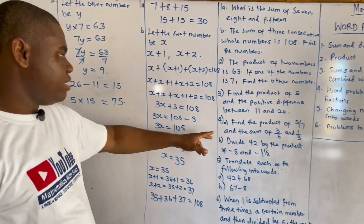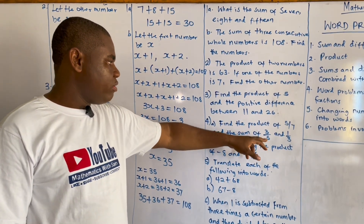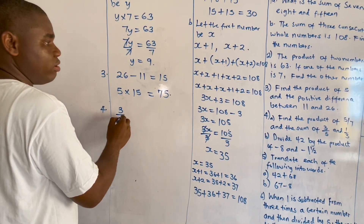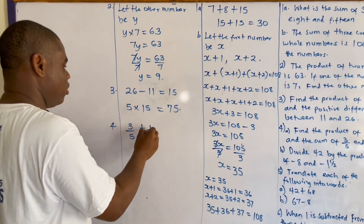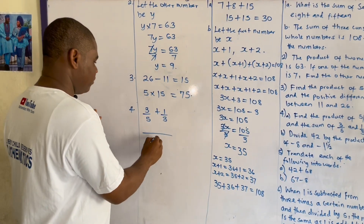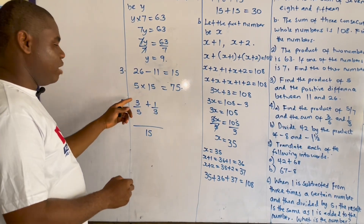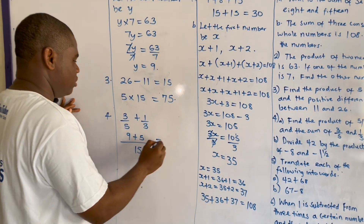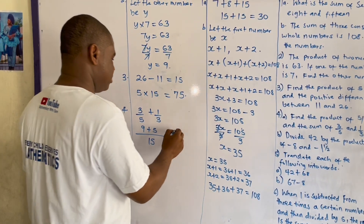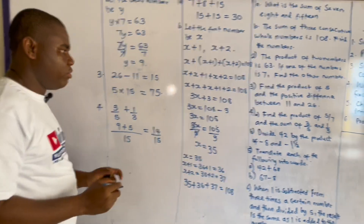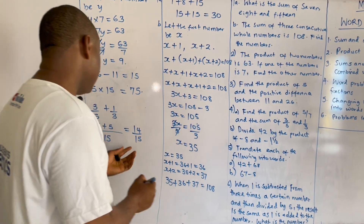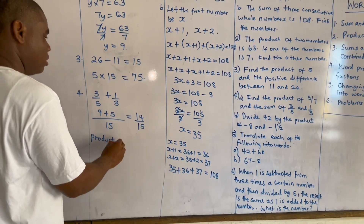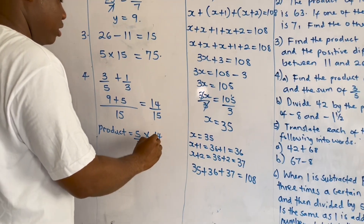For example four, the first part: find the product of five-sevenths and the sum of three-fifths and one-third. First, find the sum of three-fifths and one-third. The common denominator of five and three is fifteen. Three-fifths becomes nine-fifteenths, and one-third becomes five-fifteenths. So nine plus five gives us fourteen-fifteenths. The equation then asks for the product of five-sevenths and fourteen-fifteenths, so we compute five-sevenths times fourteen-fifteenths.